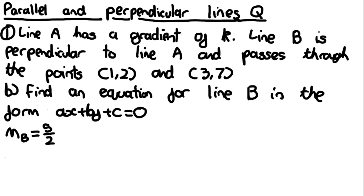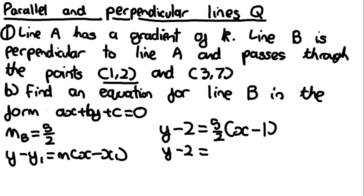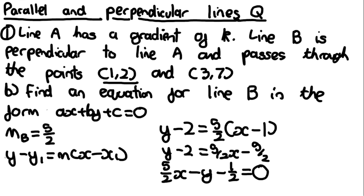For part B, using the gradient of line B found previously (5/2) and a point on line B, we use y minus y1 equals m(x minus x1). Writing this as y minus 2 equals 5/2 times (x minus 1), expanding gives y minus 2 equals 5/2 x minus 5/2. Rearranging: 5/2 x minus y minus 1/2 equals 0. Multiplying everything by 2 to make integers: 5x minus 2y minus 1 equals 0. This is the final answer.